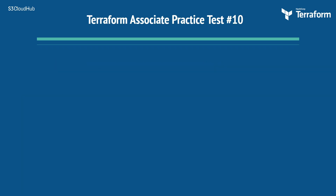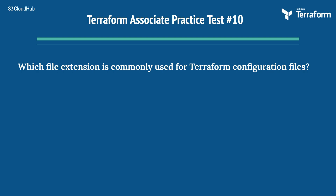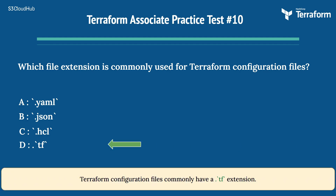Question 10: Which file extension is commonly used for Terraform configuration files? Options: A) YAML, B) JSON, C) HCL, D) .tf. The right answer is D) .tf. Terraform configuration files commonly have a .tf extension.